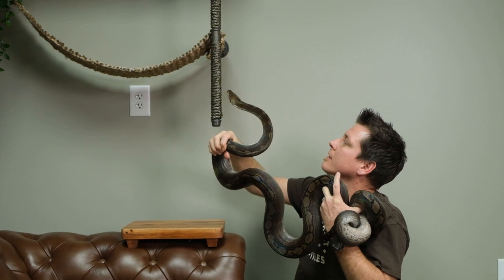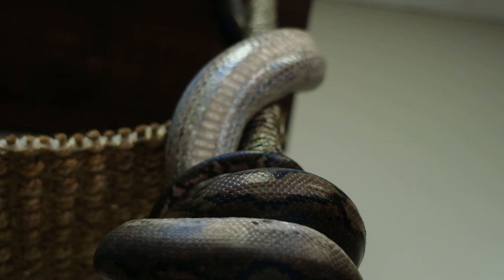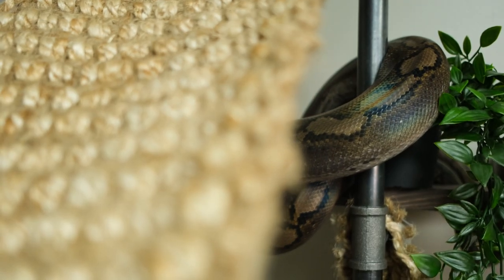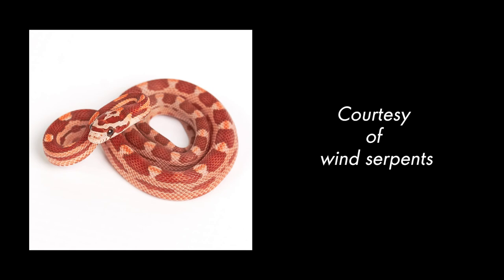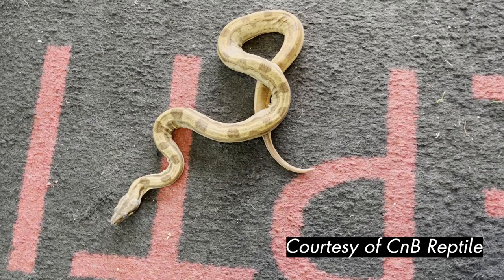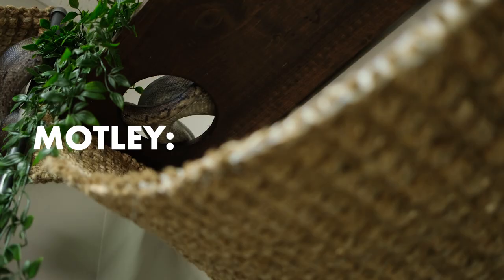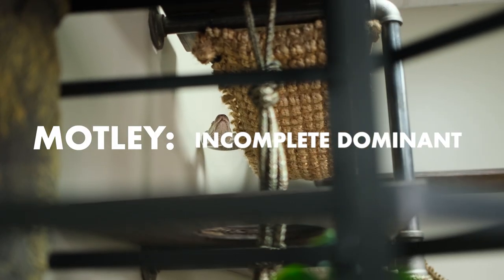Motley is a classic mutation in a lot of different species, but what we call motley in reticulated pythons is actually completely different than anything else. The pattern looks similar to the motleys in a corn snake or a boa constrictor, but in corn snakes motley is a recessive mutation. In boa constrictors it's allelic with their hypomelanistic mutation, but in reticulated pythons motley takes the form of an incomplete dominant mutation. That means if I breed this motley to any other reticulated pythons I automatically get half motleys in the clutch.